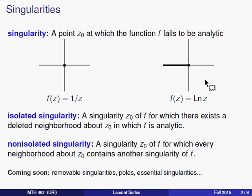On the other hand, if we were to take any point on the branch cut for the principal logarithm and consider a small neighborhood about that point, you'll see that the small neighborhood includes another point for which the function is also not analytic. So we'd say that these points are all non-isolated singularities.